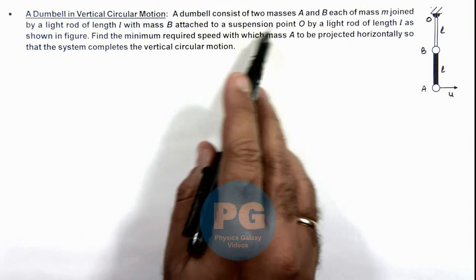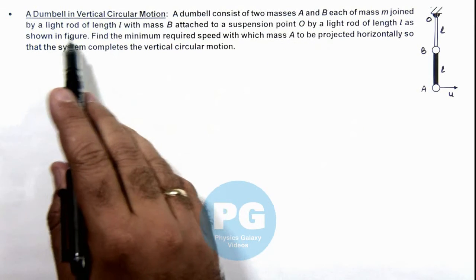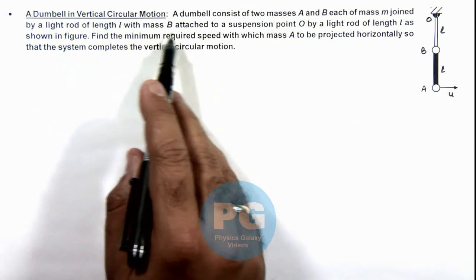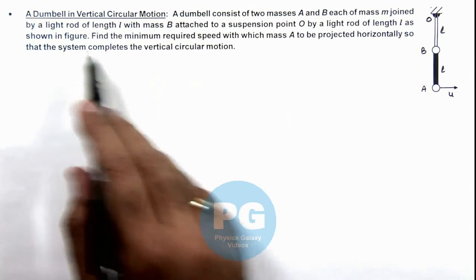Here a dumbbell consists of two masses A and B, each of mass m, joined by a light rod of length l with mass B attached to a suspension point O by a light rod of length l as shown in figure.